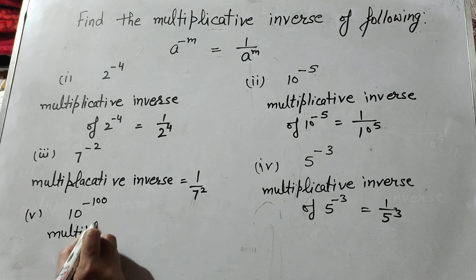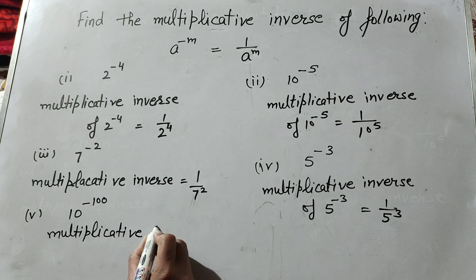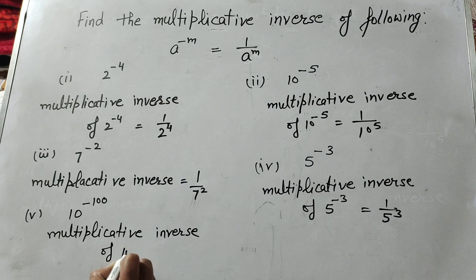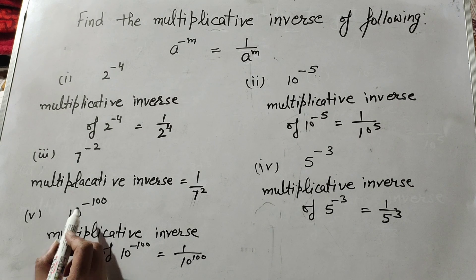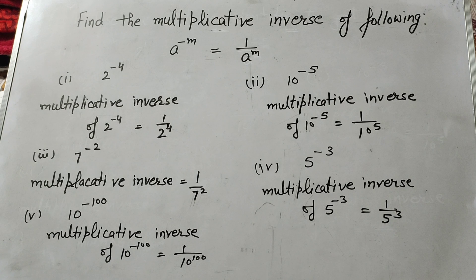The multiplicative inverse of 10 raised to power minus 100 is 1 over 10 raised to power 100.